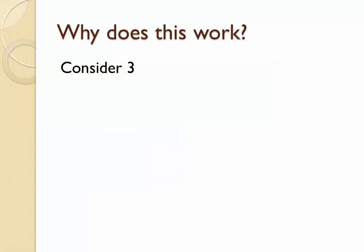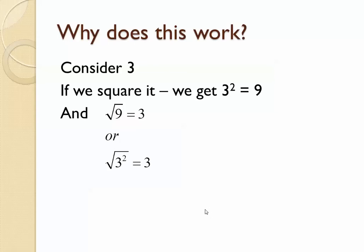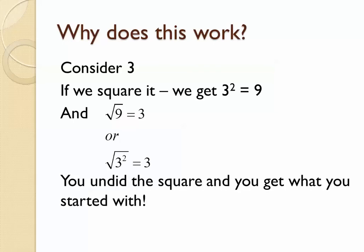So let's take a look at why this works. Let's start with 3. If I square 3, I'm going to get 9 — 3 times itself is 9. And if I take the square root of 9, I'm looking for a number that multiplies by itself 2 times to get 9, and we know that square root would be 3. I can also rewrite 9 as 3 squared, so you can see the square root of 3 squared equals 3 — the squared and the square root cancel each other out. You undo what you did, and you get what you started with, which was 3.